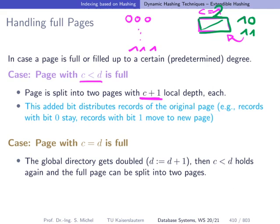So this should be easy to see. There will also be an example soon. And then there's the more complicated case where c equals d, that means the local depth equals the global depth. In this case, we cannot increment c and be done. In this case, we have to increment d. Incrementing d means we are doubling the directory because directory has size of 2 to the d, and now we are incrementing d by 1, so we have 2 to the d plus 1.